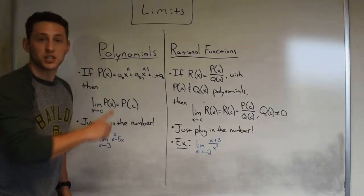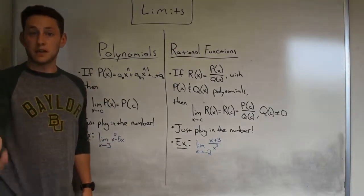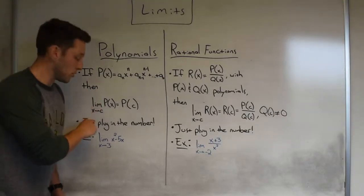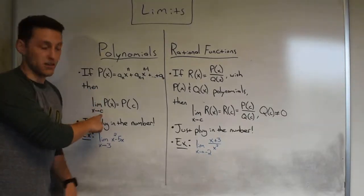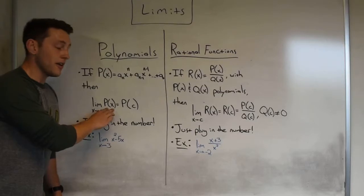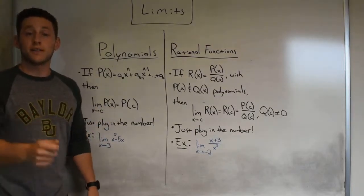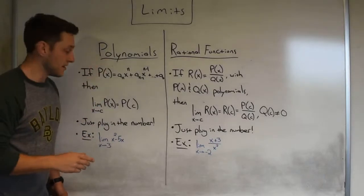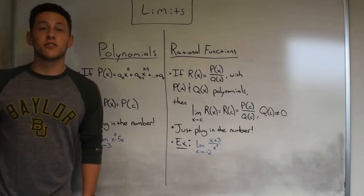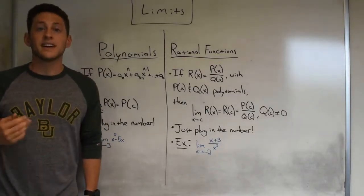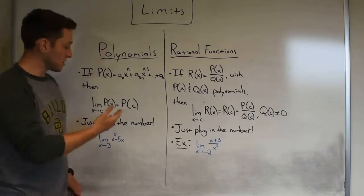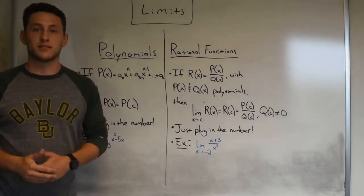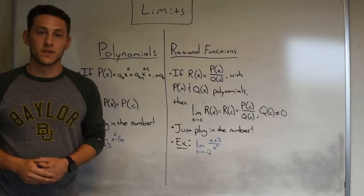If we have a polynomial function, let's call it p, then when you do the limit as x approaches some number c of our polynomial, all you have to do to compute it is just plug in the number c. So that's going to be our first rule: if given a polynomial and you're trying to find the limit, just plug in the number at the bottom that we're trying to evaluate.